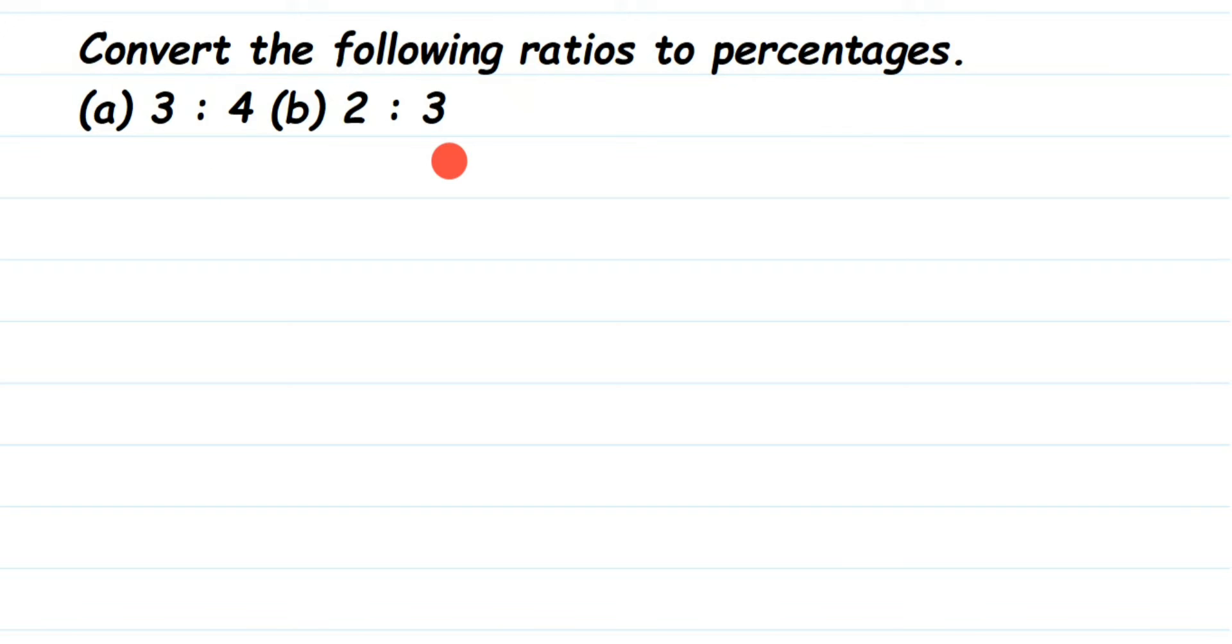Now let's see how to find out the percentage of these two questions. First one is 3 is to 4. Whenever we write down a ratio, we know that ratios can be written in a fractional form, so this will become 3 by 4.